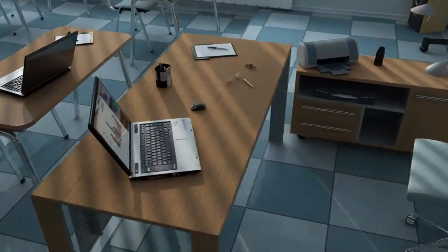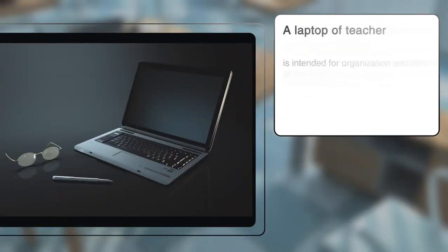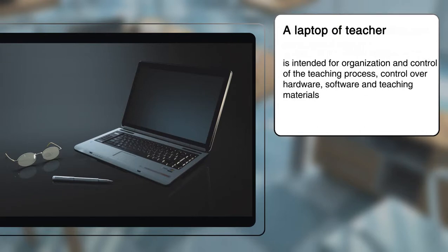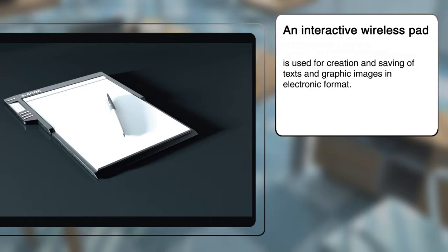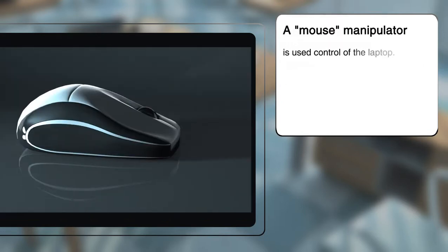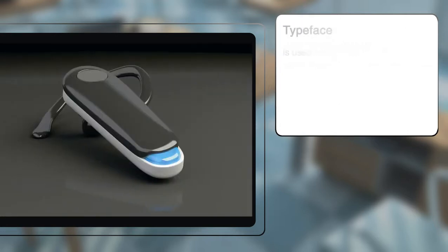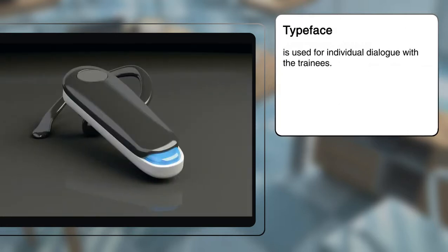Teacher's workstation includes a laptop intended for organization and control of the teaching process, control over hardware, software and teaching materials. An interactive wireless pad is used for creation and saving of texts and graphic images in electronic format. The teacher's workstation is equipped with a mouse manipulator, interactive pencil, printer, and typeface for individual dialogue with the trainees.